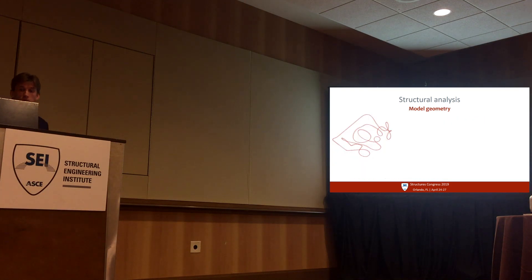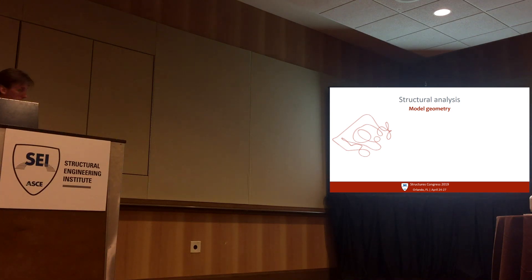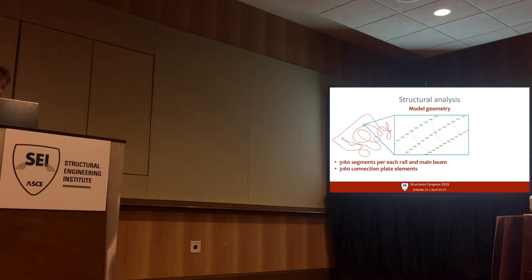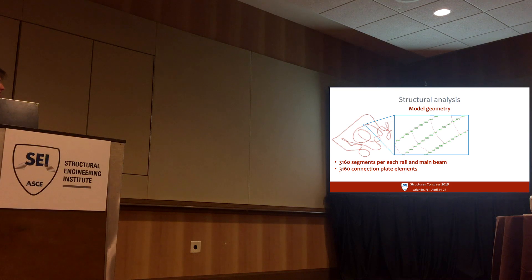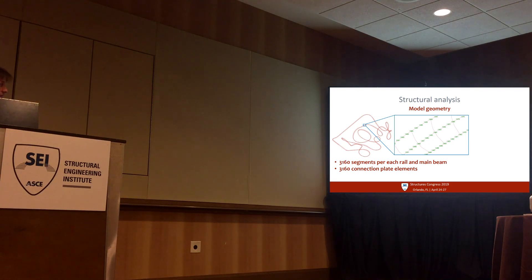After that, you have to build the model geometry, and again this was done using Grasshopper algorithms. Following the same rule as for kinematic analysis — 0.35 meter spacing — dividing the track with this spacing gives nearly 3,000 elements per each rail and main beam, and 3,000 elements for each of the connection plates. Each element has its own unique orientation.